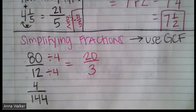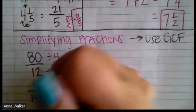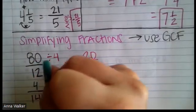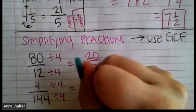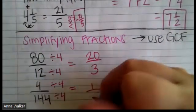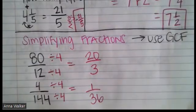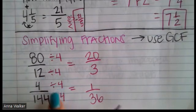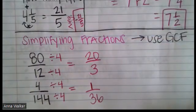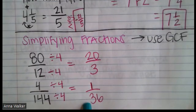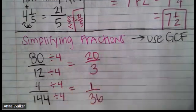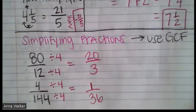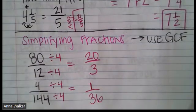Let's look at the next one: 4 over 144. The factors of 4 are just 1, 2, and 4, and all of those go into 144. So 4 is the greatest common factor. Four divided by 4 is 1, and 144 divided by 4 is 36, giving us 1 over 36. Sometimes one of our numbers — the numerator or denominator — is itself the GCF, and dividing gives us 1 as either part of the fraction. Both fractions are now simpler, making them much easier to work with.